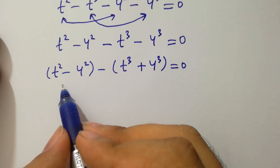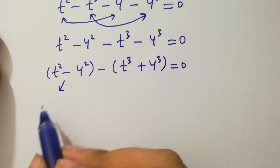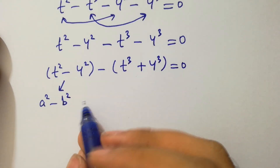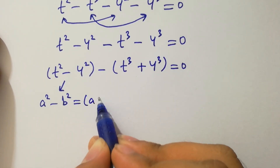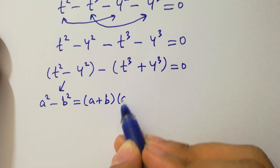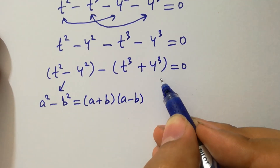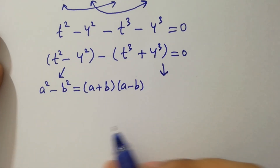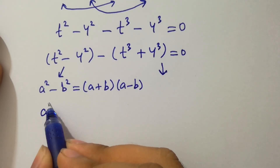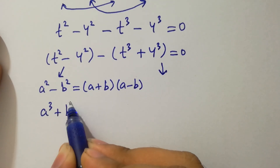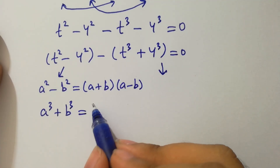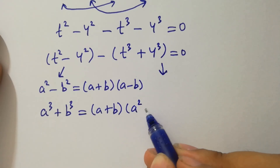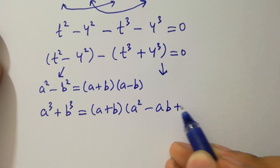By this we know the formula of a squared minus b squared, which equals a plus b times a minus b. And we know the formula of a cubed plus b cubed, which equals a plus b times the quantity a squared minus ab plus b squared.